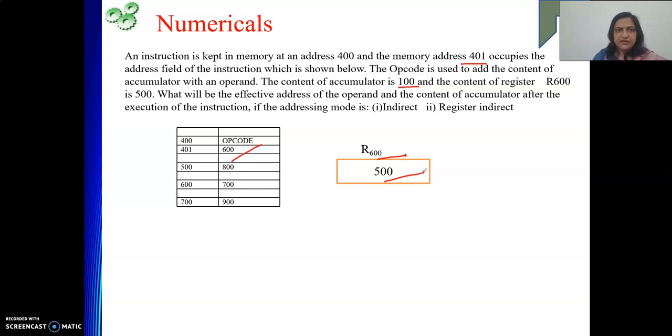They are asking us, the code of the instruction is to add the content of accumulator with an operand. What is that operand that we need to find out? Accumulator content we need to add to it. An accumulator initial value is 100. If the addressing mode is indirect, then what will be the answer?